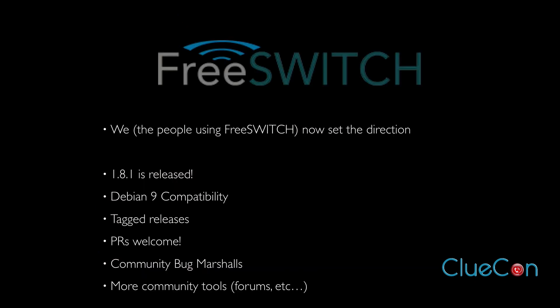We are now the people who can set the direction of FreeSwitch. A good example is that version 1.8.1 is now out — you can go download it, tagged to release with Tony's keynote. Let's give a hand to Mike Jerris, because he really did put a lot of time into that. It comes with a lot of things people have really wanted, like Debian 9 compatibility. We're going to continue to do tagged releases and you'll see those more frequently.